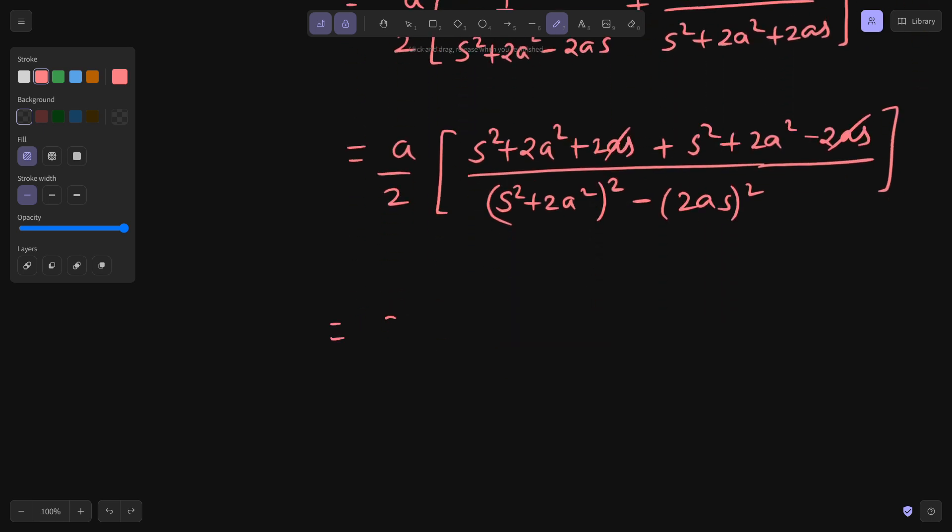You are getting something like 2s square where I can take 2 common, 4a square where if I take 2 common you get 2a square. And in denominator, s power 4 plus 4a power 4 plus 4s square a square minus 4s square a square. So this gets cancelled.